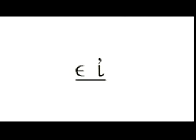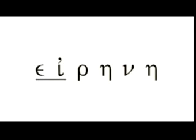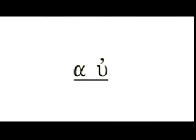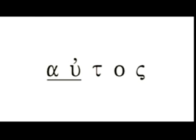EI, pronounced like 'eight,' as in eirene, which means 'peace.' OI, as in oikos, which means 'house.' HUI — notice the rough breathing — as in huios, meaning 'son.' AU, as in autos, which means 'self' — for instance, 'automobile.'